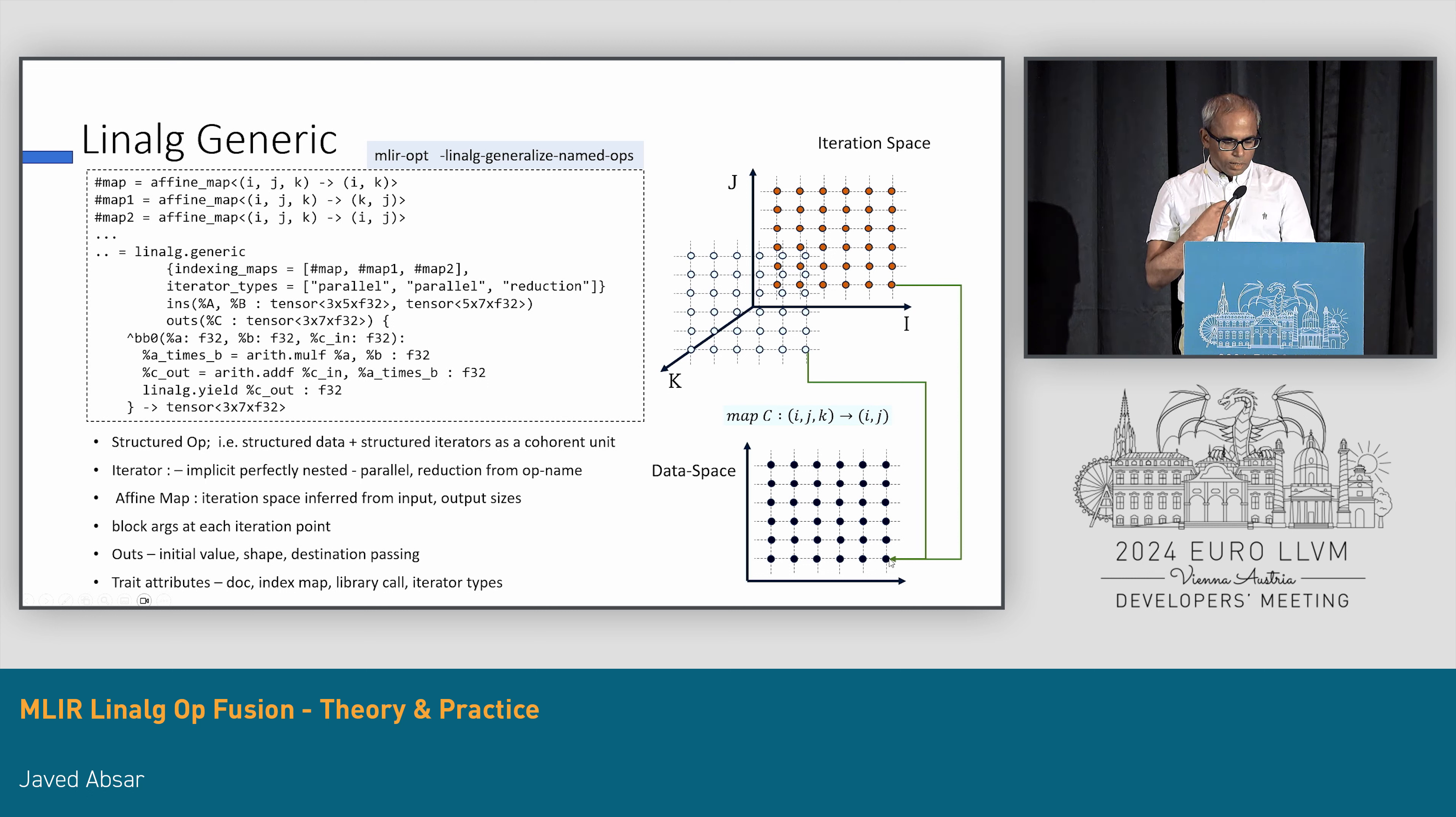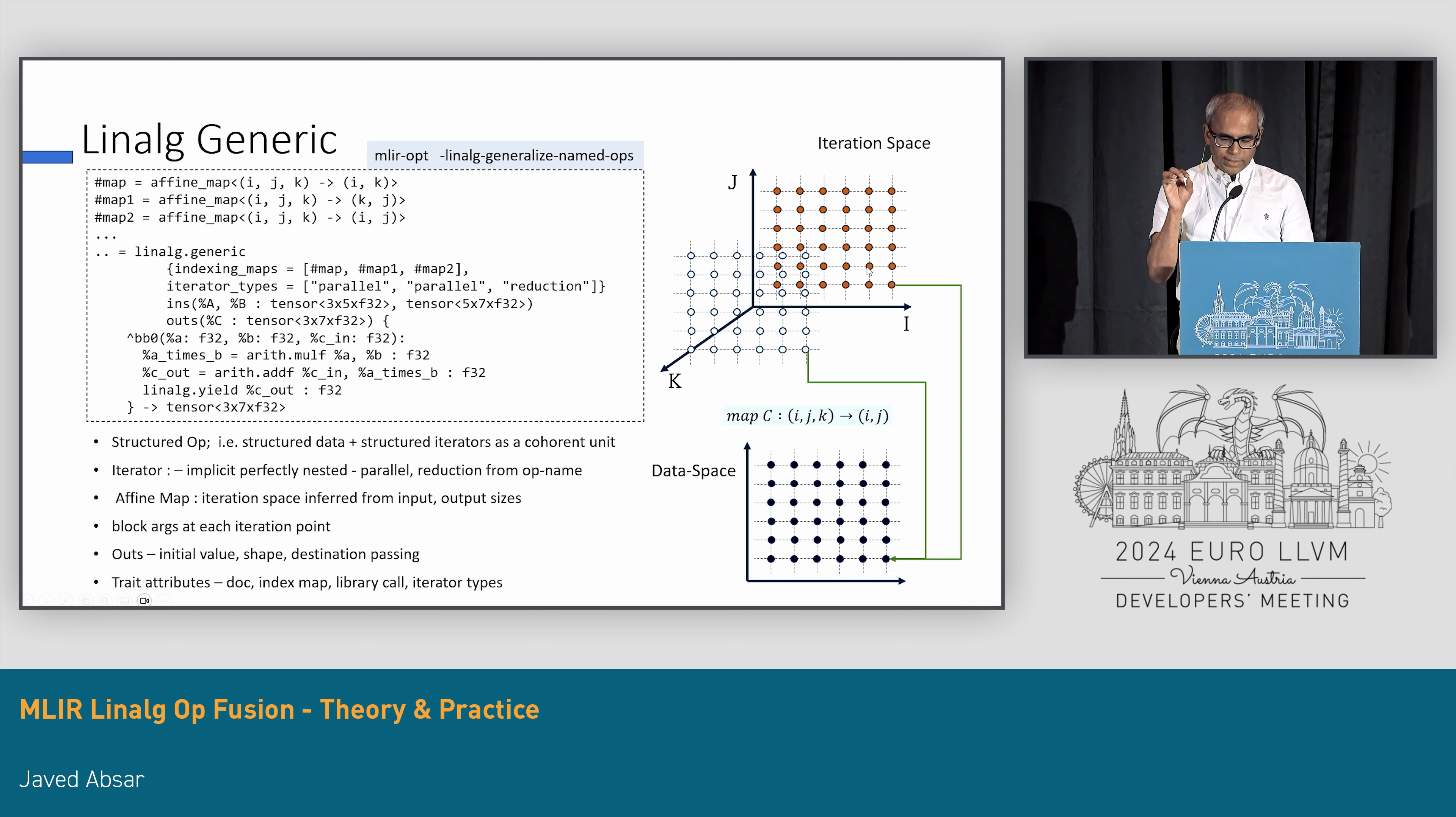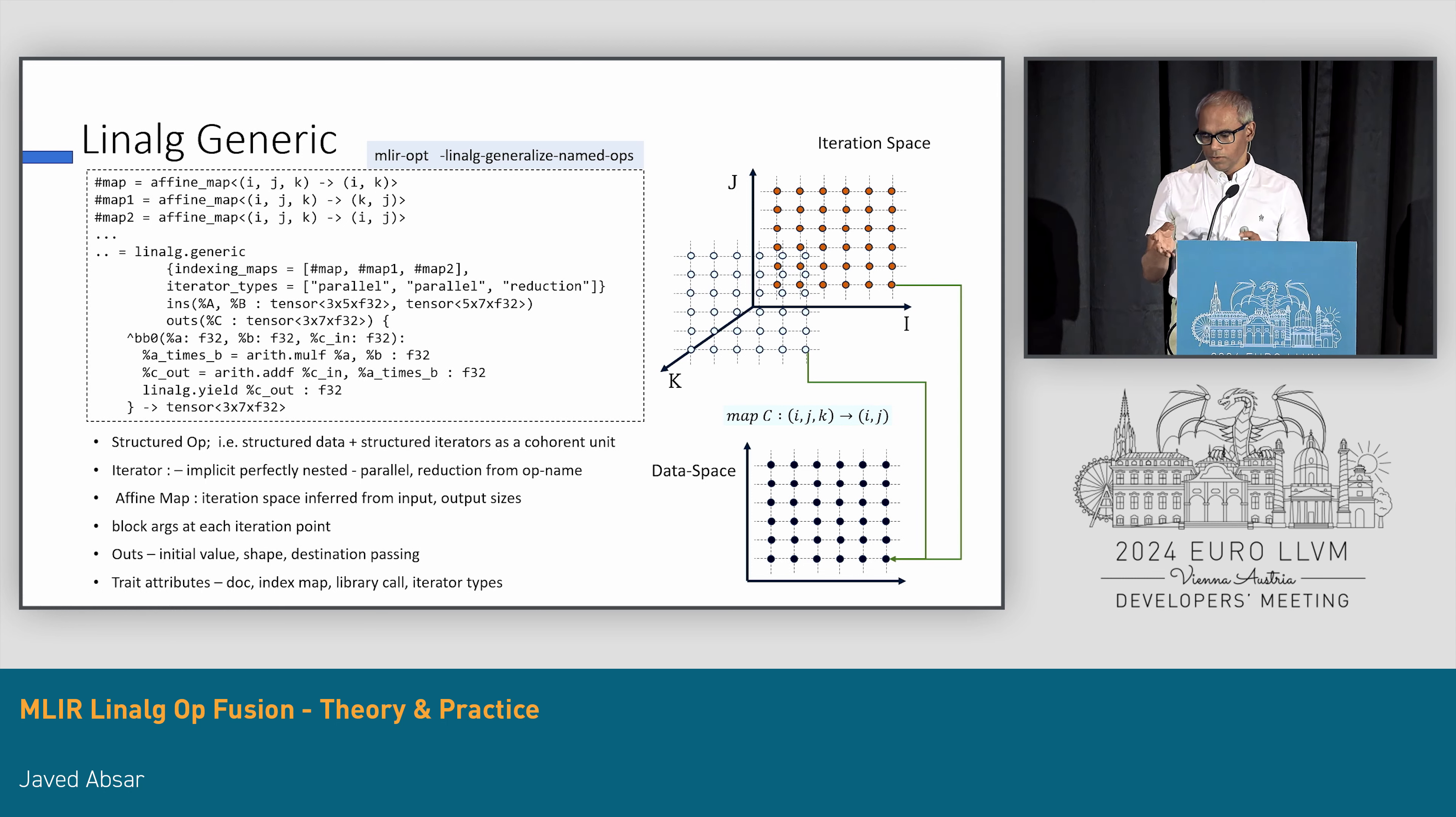Index maps really are mapping from the iteration space, so every point here is an iteration point, to the data space. For matrix multiply, for the C, the output, is i, j, k mapping to i, j. So you can see it's invariant to k. You have these index maps. You need three of them because there's A, for all the ins and outs, so A, B, and C. What it does really, the body of the linalg generic is for each of these iteration points, the iterators to the map tells you the index for each of these A, B, C, all the ins and outs. And those form the arguments to the basic block, so the block arguments. And then the code inside the basic block is scalar code. In the case of matrix multiply, you do multiply and add.